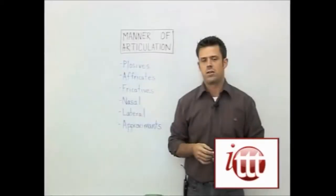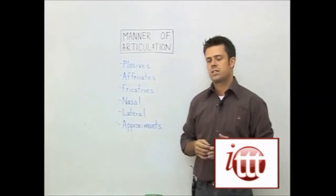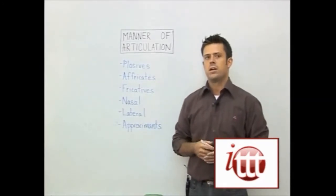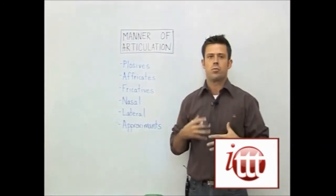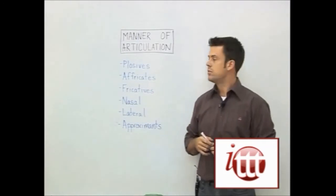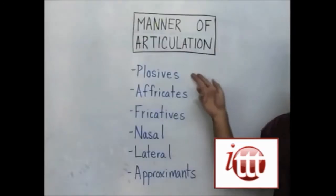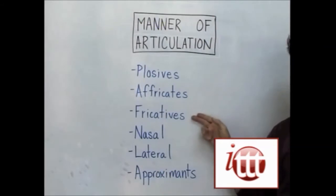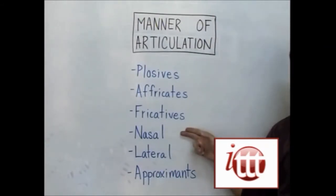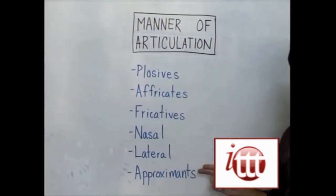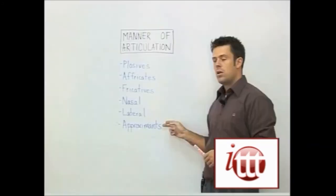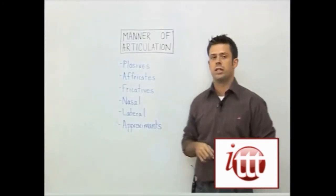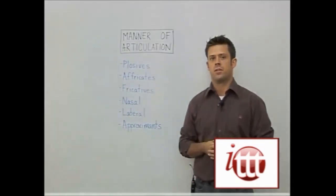When it comes to manner of articulation, we have six different ways in which our breath is produced in order to make our sounds. We have our plosives, our affricates, fricatives, the nasal sounds, our lateral sound, and the approximants. Let's take a look at each individually and see how they differ from one another.